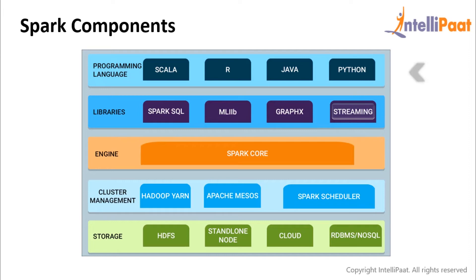Coming to programming languages, Spark can be implemented in Scala, R, Python, and Java. However, Scala is the most widely used language for Spark. Finally, data can be stored over HDFS, local file system, and cloud. It also supports SQL and NoSQL databases. So now you might have a brief idea about Spark's components.